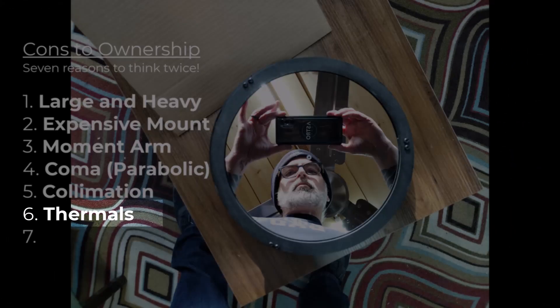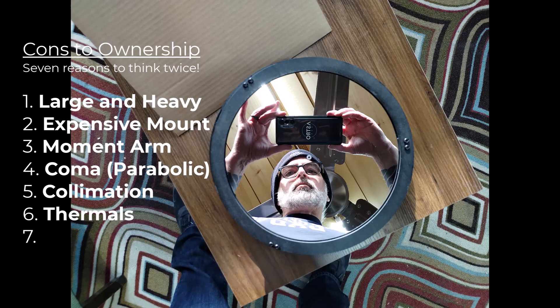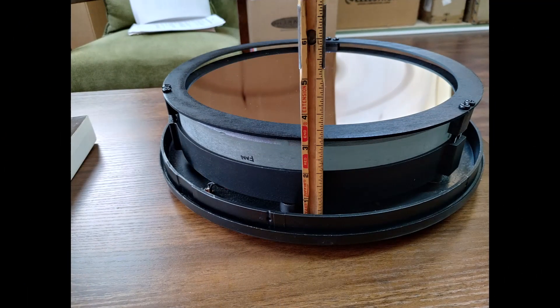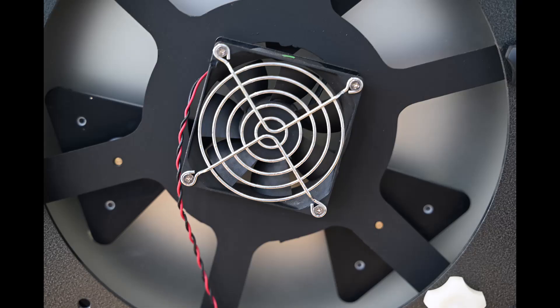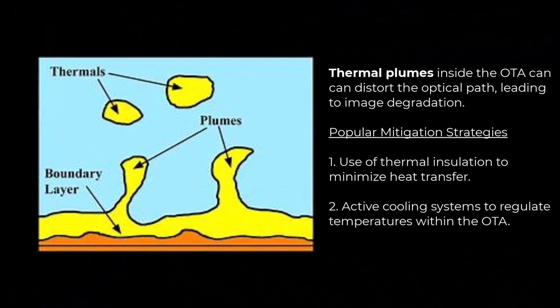Now, the sixth con really applies to any instrument that has large optics, large mirrors in particular. It's thermal management. And so it's not just for the Newtonian reflector. You need to allow enough time for the optics to cool and reach ambient temperature. You can use fans to accelerate that time and maintain the temp over your sessions. Why is this important? Well, if the mirror is warmer than the ambient temperature, you'll actually get plumes, heat plumes that will distort your images. So this is a real issue for this very large mirror. It takes time to cool.